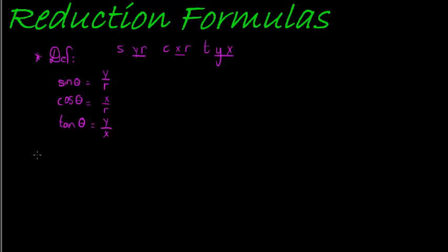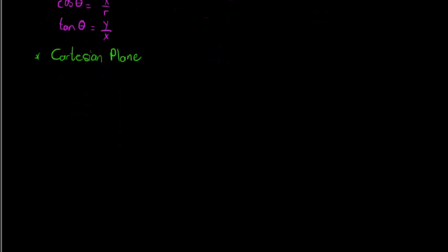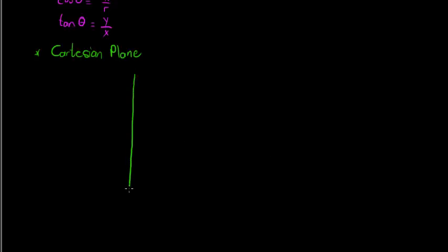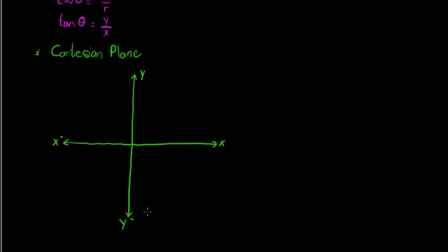The second thing that's very important to understand is what the Cartesian plane looks like. What's important here is that you know that this is the positive x-axis, that is the positive y-axis, this is the negative x-axis, and that is the negative y-axis.